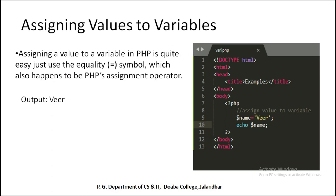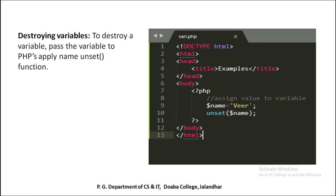The next concept is assigning values to variables. To assign a value to a variable, we use the equals-to symbol. For example, dollar-name equals a value. We can store a value in the variable and output it. To destroy a variable, we apply the unset function — for example, if dollar-name had a value assigned, we can then unset it using unset(name), where the parameter is the name of the variable.